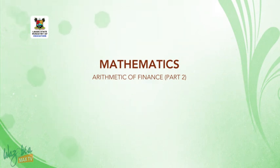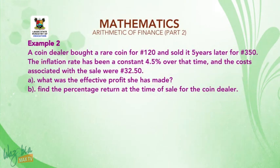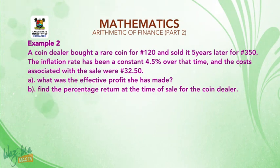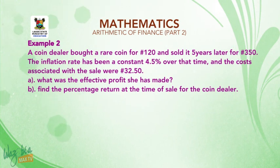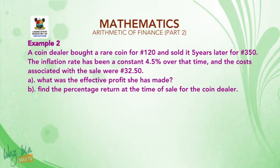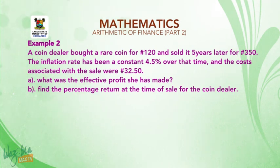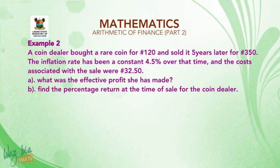Welcome back. Example 2: A coin dealer bought a rare coin for 120 Naira and sold it 5 years later for 350 Naira. The inflation rate has been a constant 4.5% over that time, and the costs associated with the sale were 32 Naira 50 kobo. (A) What was the effective profit she has made? (B) Find the percentage return at the time of sale for the coin dealer.